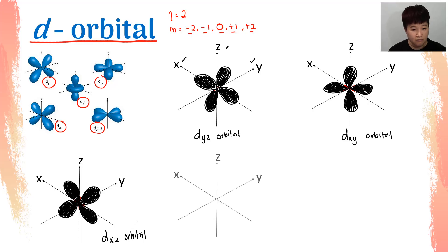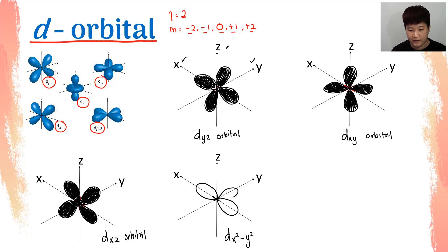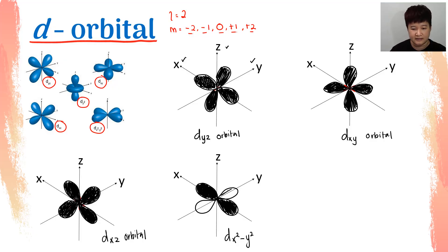How about DX²-Y²? What makes X² and Y² different? When it's a square, it means the lobes will sit straight on the X axis and on the Y axis — not in between them. So I draw the loop on the X axis and also on the Y axis. Shade it off so you can clearly see the loops are sitting on the X axis and also on the Y axis.